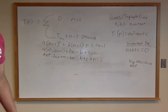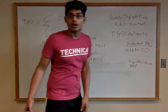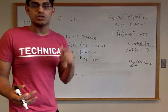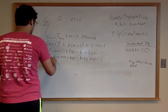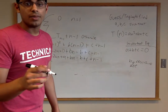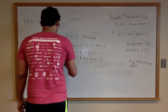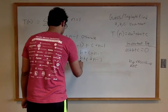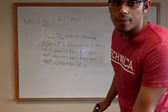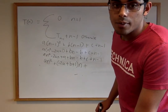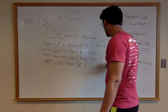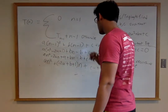We group the terms to get it in the form of our guess. Collecting the n² term gives coefficient a. Collecting the n terms gives (-2a + b + 1)·n. And the constant terms give (a - b - 1 + c). So the whole expression is: a·n² + (-2a + b + 1)·n + (c - b - 1 + a).